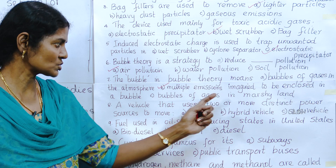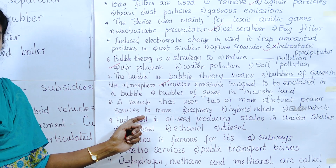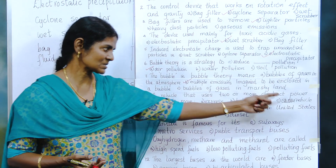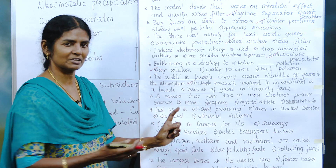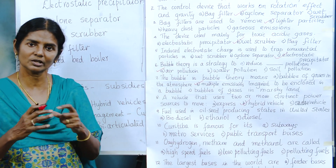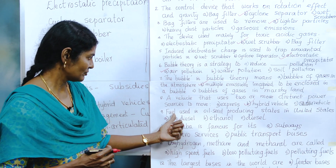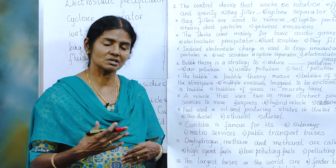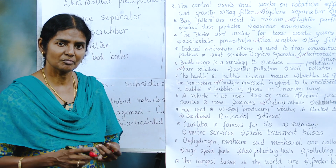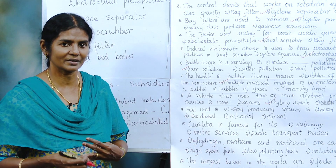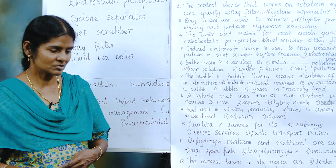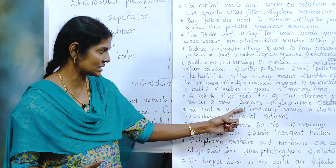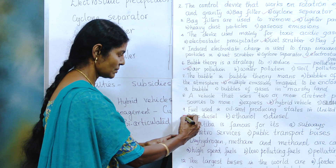A vehicle that uses two or more distinct power sources — is it an express vehicle, a slow vehicle, or a hybrid vehicle? Hybrid vehicles have a mixture of two or more power sources combined together. Next: fuel used in oil seed producing states. We are finding alternate fuels in place of petrol or diesel because they are non-renewable. They are trying to find fuel from oil seeds — this is called biodiesel.